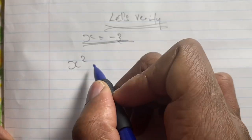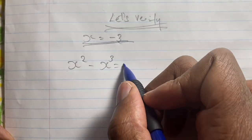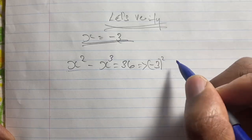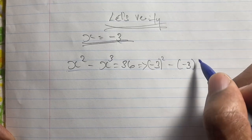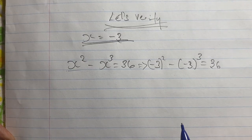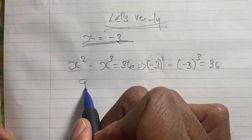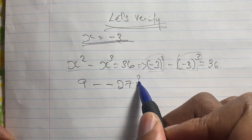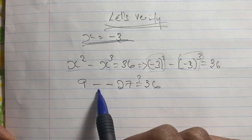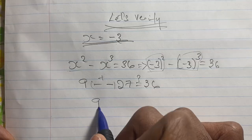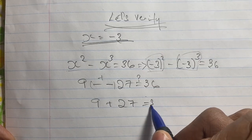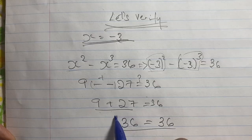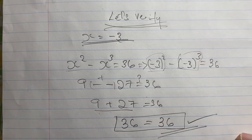Now we'll verify our real solution x equals negative 3. Our original equation states x squared minus x cubed equals 36. Substituting, we have (negative 3) squared minus (negative 3) cubed equals 36. Negative 3 squared gives positive 9, and negative 3 cubed gives negative 27. So we have 9 minus (negative 27), which is 9 plus 27 equals 36. Our solution is verified — x equals negative 3.